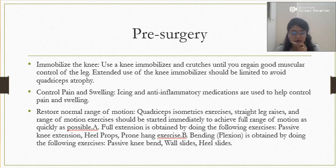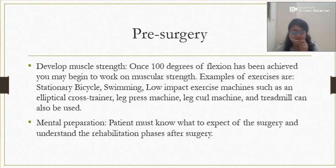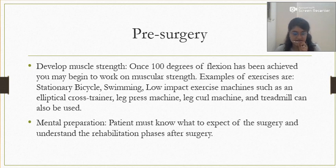The second pre-surgery goal is to control pain and swelling — ice packs and anti-inflammatory medications are given. Restore normal range of motion: quadriceps exercises are done isometrically and dynamically, and straight leg raises are performed. Range of motion exercises should be started immediately to achieve full ROM as quickly as possible. Patient counselling and education are very important — the patient needs to understand what is torn, what surgery will be performed, the phases of rehabilitation, precautions, and the home program. Develop muscle strength through low-impact activities such as swimming, stationary bicycle exercise, and leg press machine.